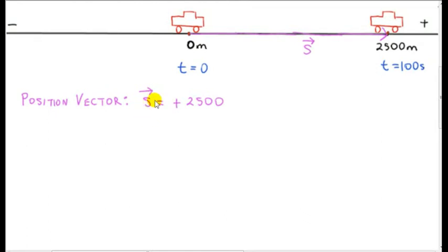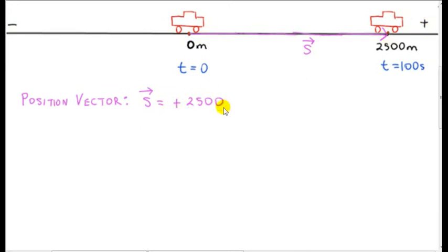We need to be careful here — s is not the speed. We can think of this letter s as the space traversed by the car. It's a vector pointing to the right, so it's assigned a plus sign.